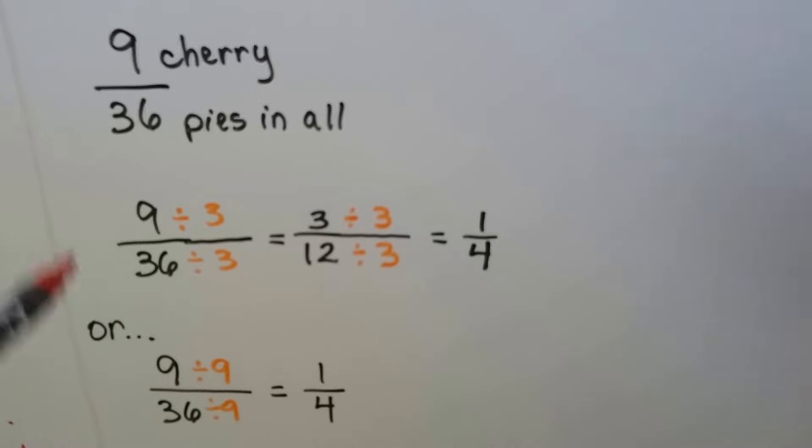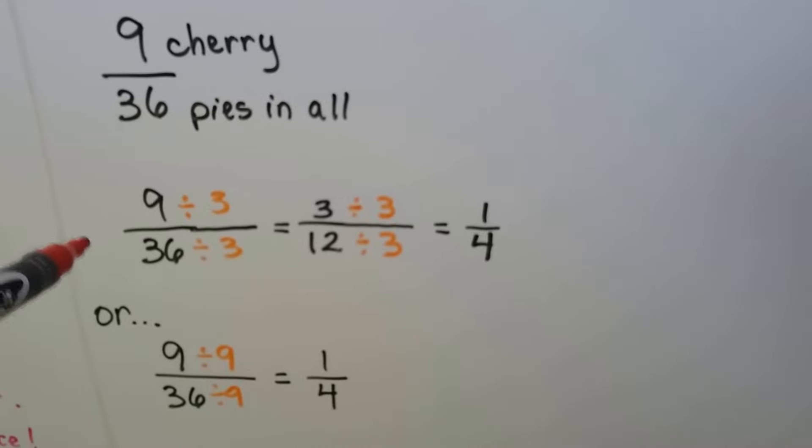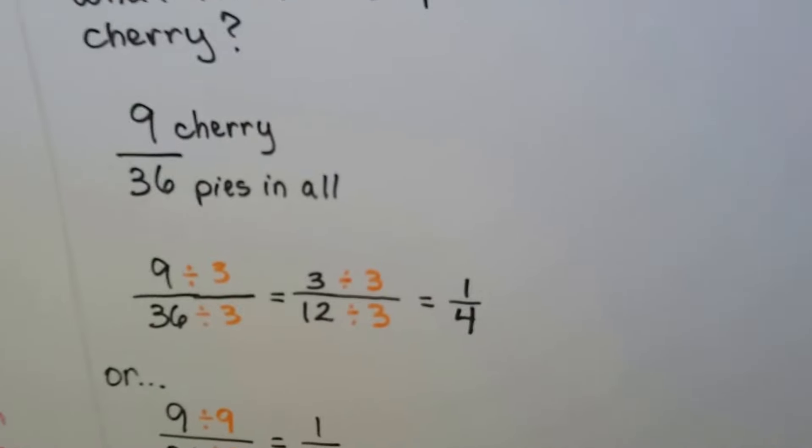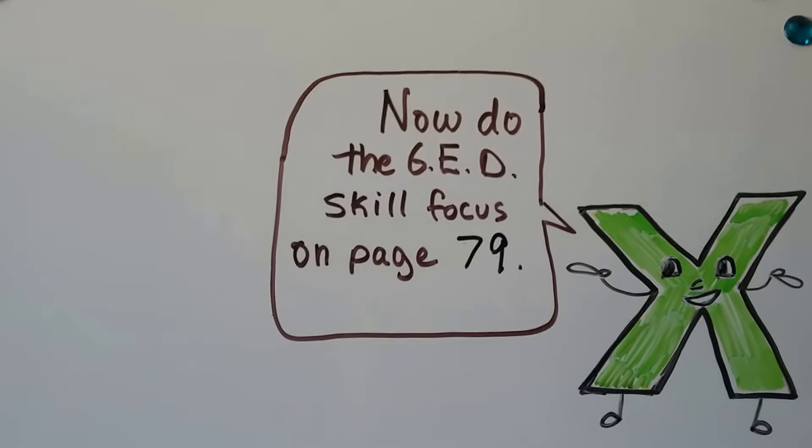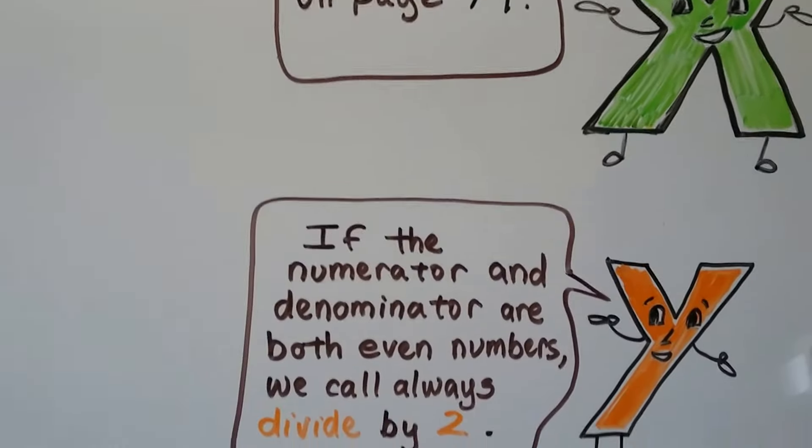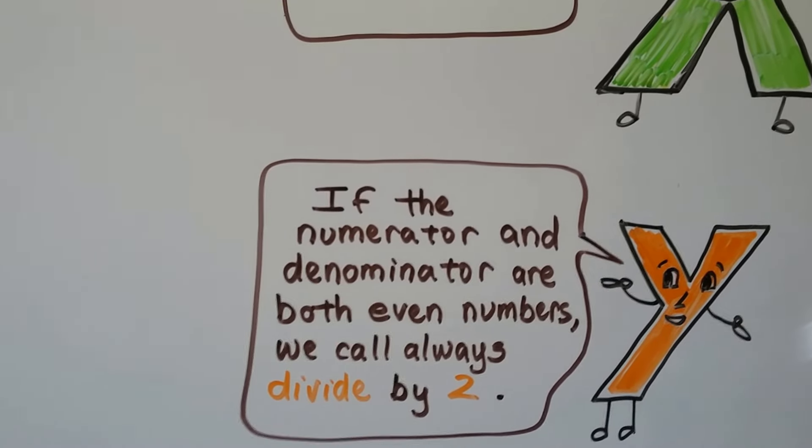Knowing your multiplication facts is going to make you go quicker on this test and it'll give you more time to do the harder problems. Now you should be ready to do the skill focus on page seventy-nine. And keep in mind that if the numerator and denominator are both even numbers, we can always divide them by two. And just keep dividing by two until you find it.